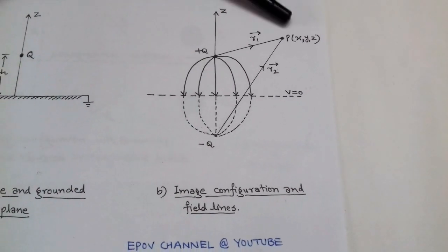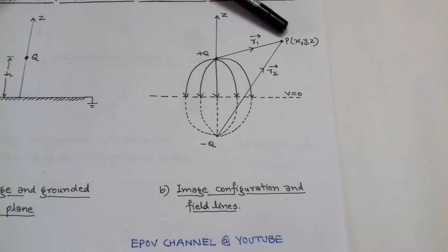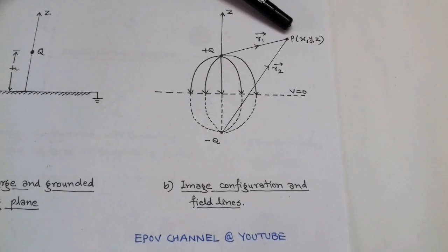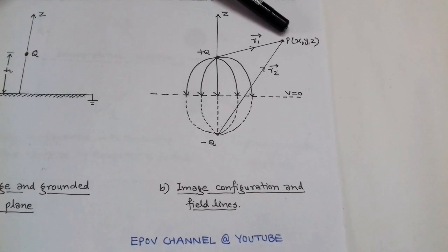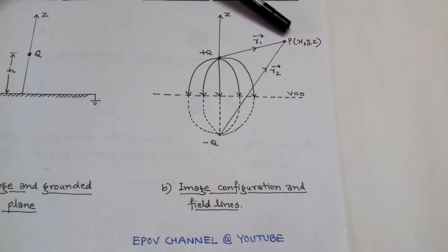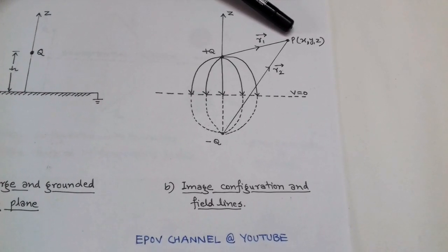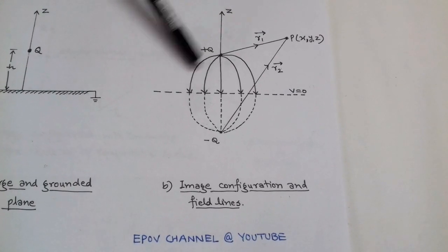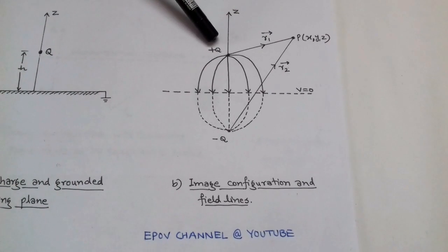Our task is threefold: first, determine the electric field at point P; second, determine the potential at point P; and third, determine the surface charge density rho_s.